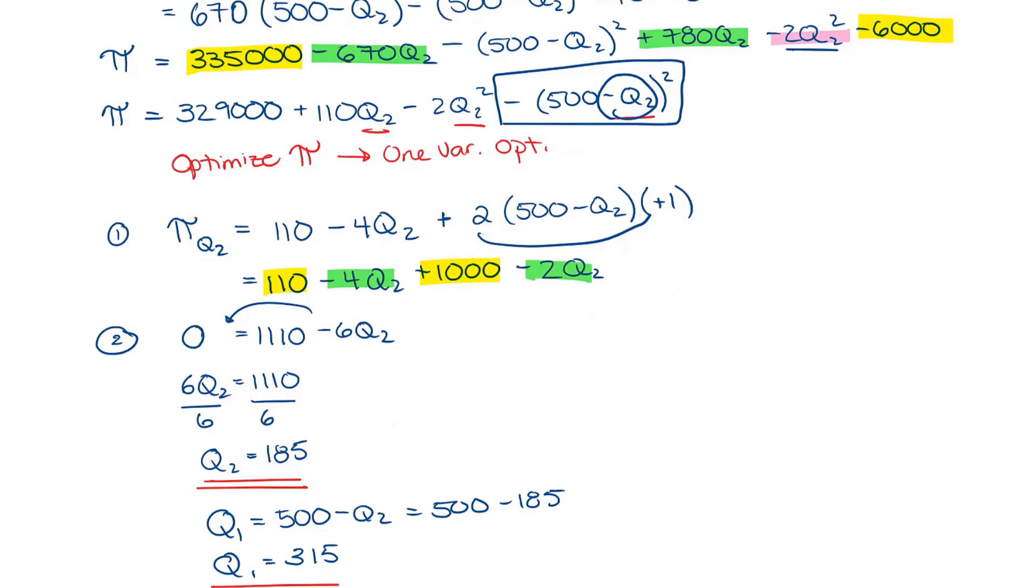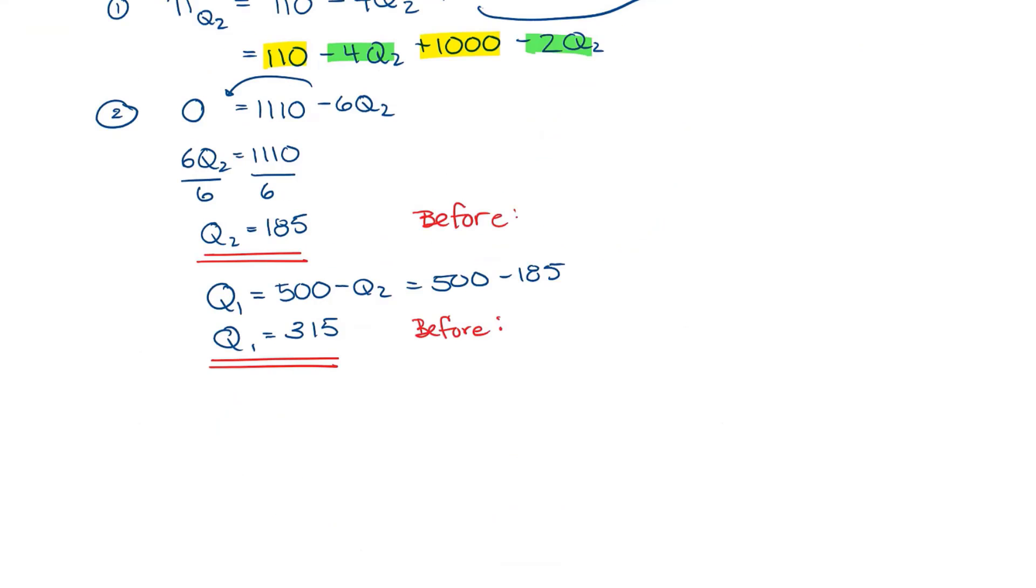So let's compare that to our befores. Before we had Q1 equal to 335 and Q2 equal to 195. So we can see that both of these values, Q1 and Q2, have dropped slightly so that we will be within our limit of 500. With unconstrained optimization, we had Q2 at 195. But because it's constrained, it had to be lowered to meet our production limit. So it was lowered by 10 for Q2 and 20 for Q1.